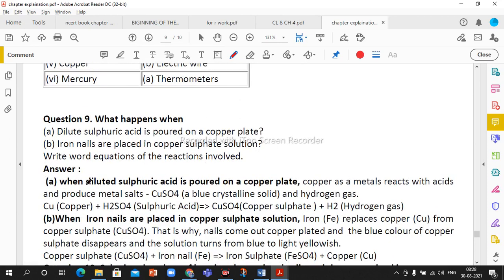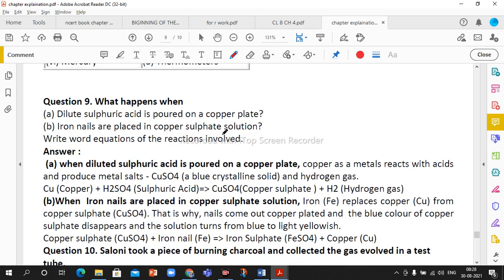Next question: what happens when dilute sulfuric acid is poured on copper plate? When we add dilute sulfuric acid to copper, metal reacts with acid and produces copper sulfate which is blue crystalline solid and hydrogen gas. So copper sulfate and hydrogen gas will be formed.